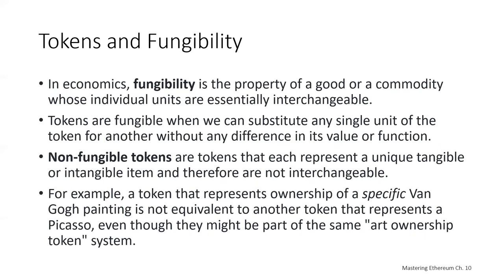The ability to track provenance can lead to blacklisting and whitelisting, which can reduce or limit fungibility. For example, if you could track the historical provenance, you could see that one particular token was used in the black market or another was not, and that might lead to blacklisting or whitelisting.